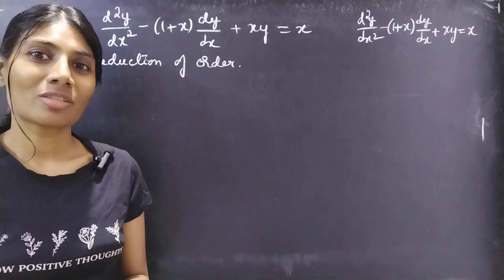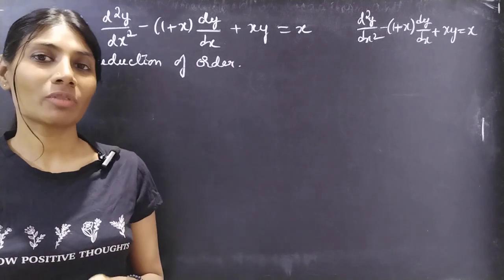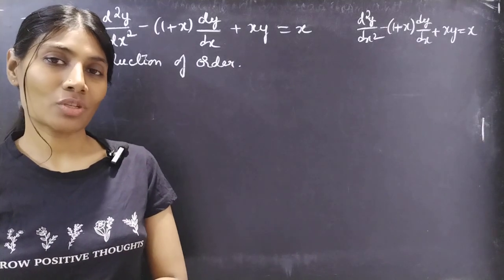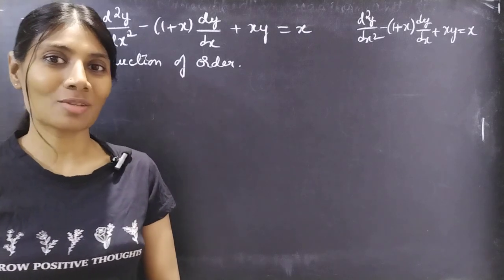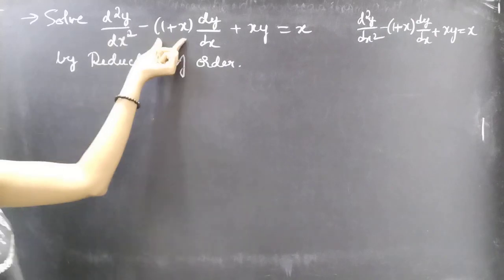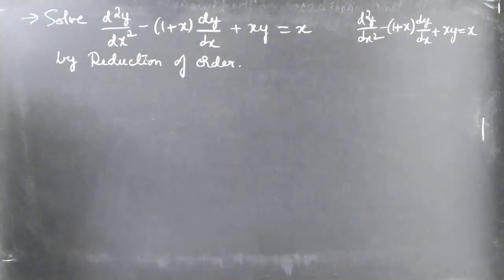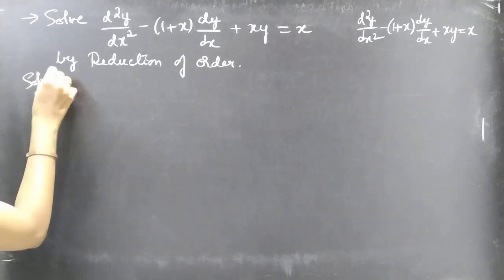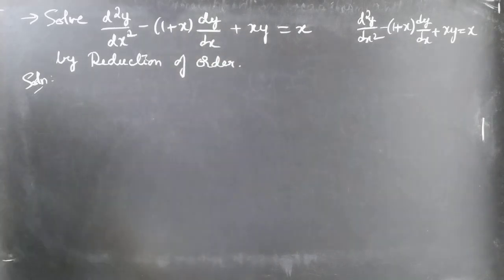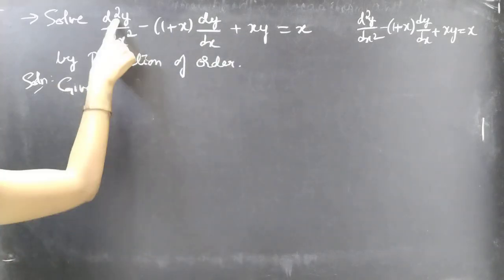Hello everyone, this is Jay Kalpana here. In this video we are going to solve a differential equation from higher order linear differential equations with variable coefficients. We are given a second order linear differential equation and we are going to solve a problem using the reduction of order method. Let's get going. Problem: solve d²y/dx² minus (1+x)·dy/dx + xy = x by reduction of order method. We have variable coefficients and the given equation is of order 2.